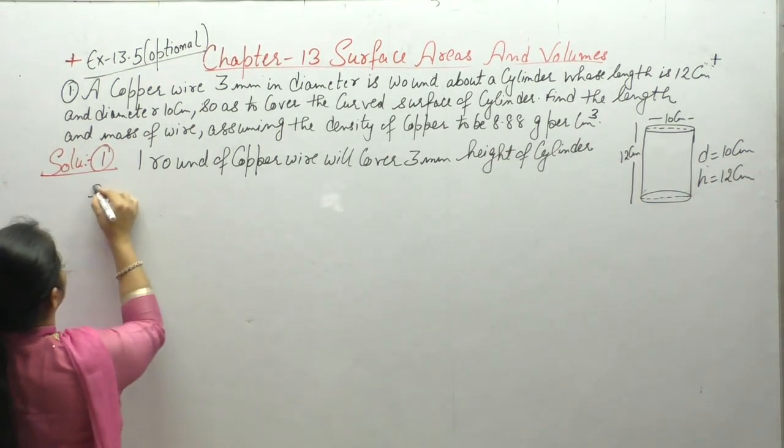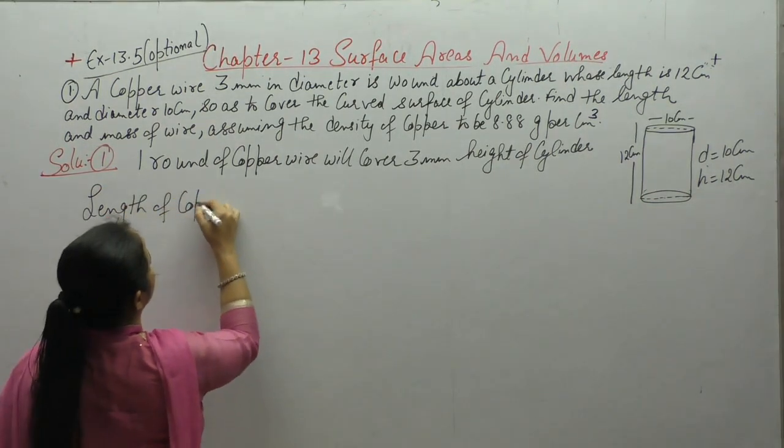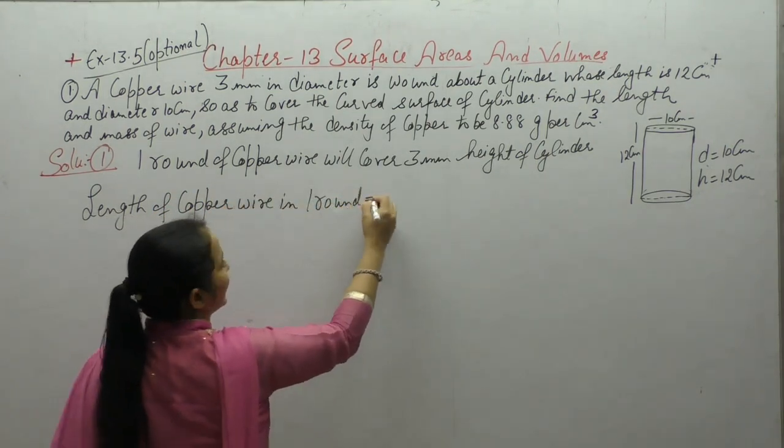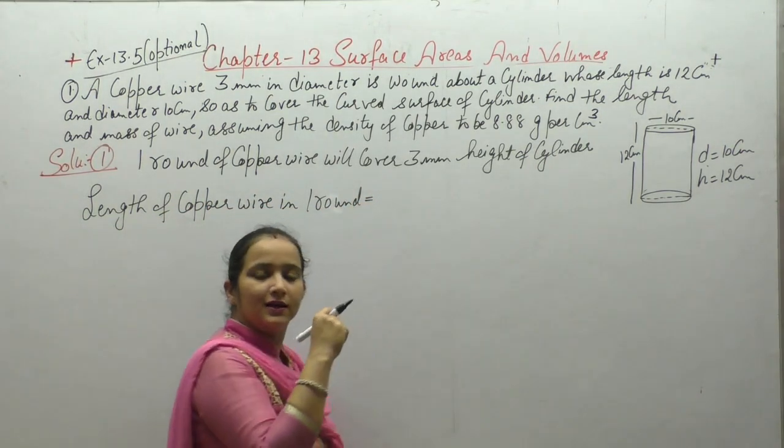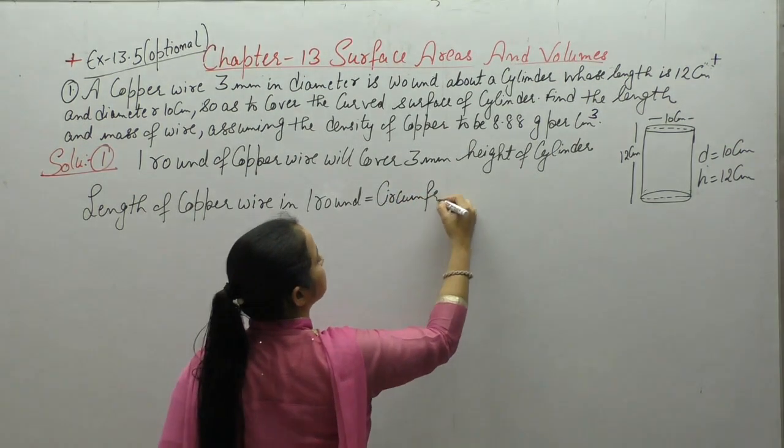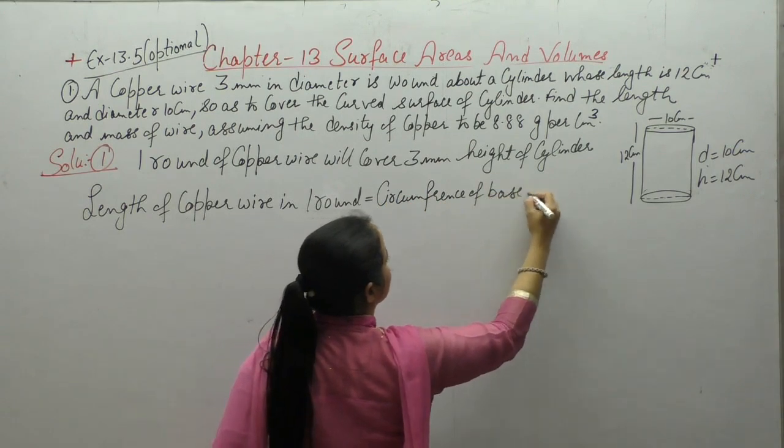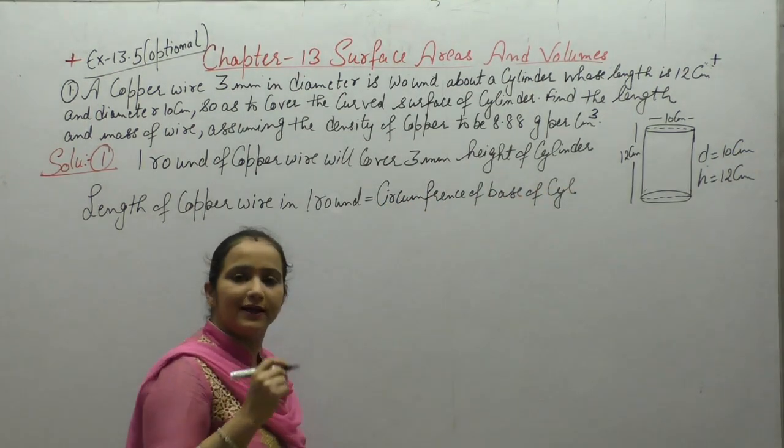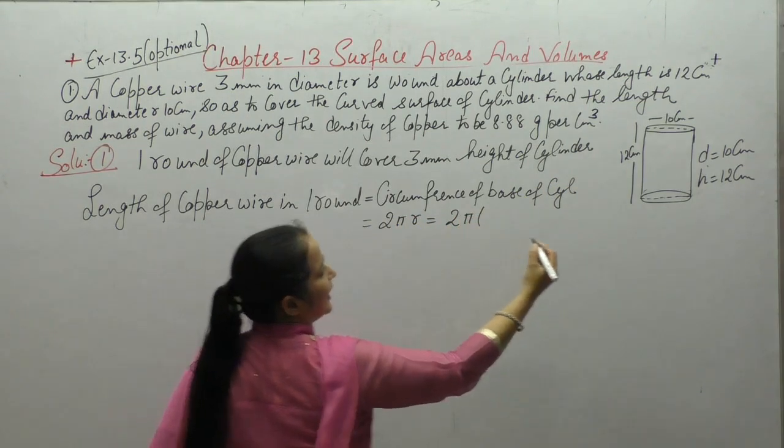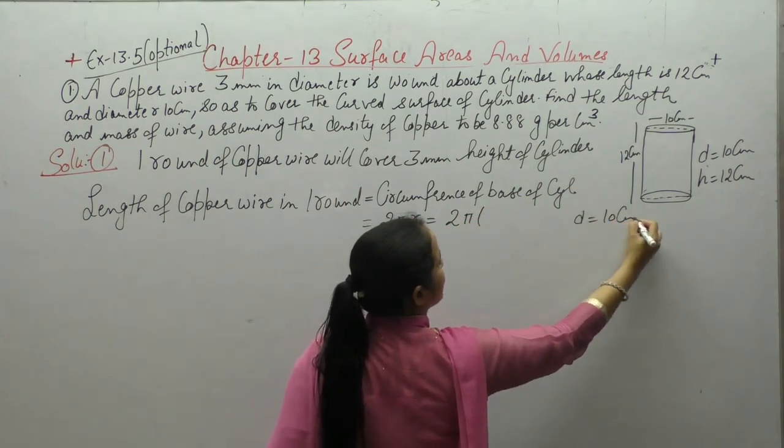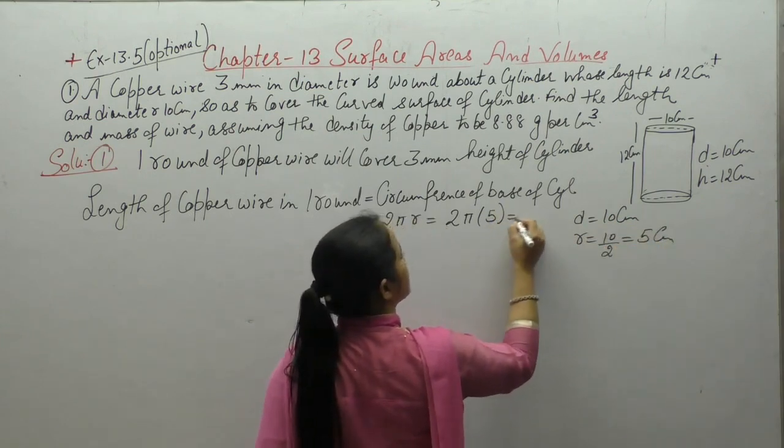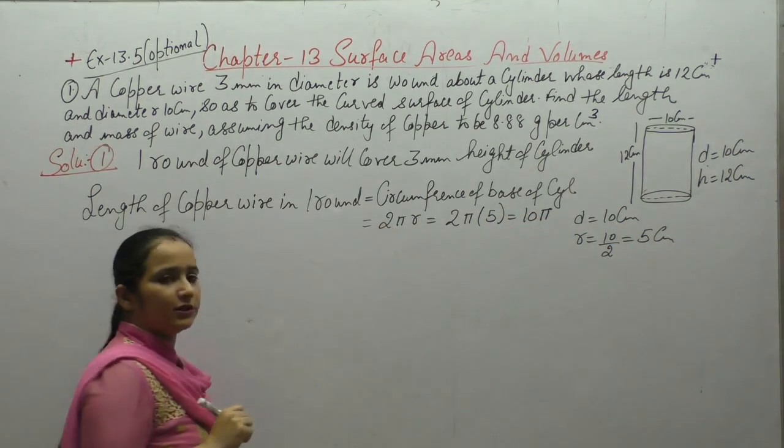Now write down: length of copper wire in one round. Length of copper wire in one round - how much will it be? As much as the base circumference. Circumference of base of cylinder. As much as the circumference is, accordingly the wire will be used. So 2πr. Diameter of cylinder is 10cm, so radius is 10÷2 = 5cm. So 10π. Length of wire in one round.